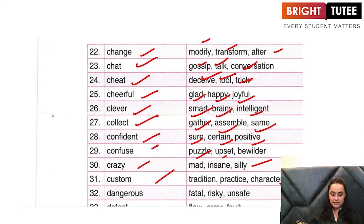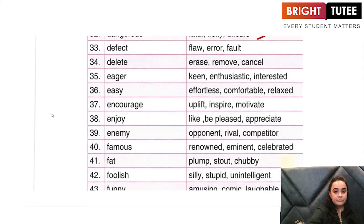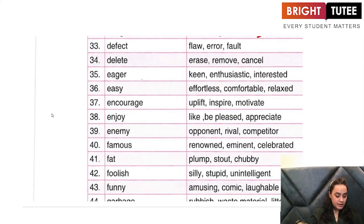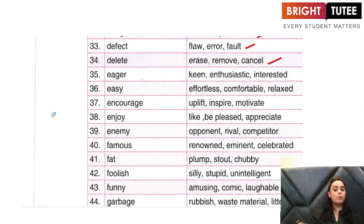'Dangerous' — is fatal, risky, unsafe. 'Defect' — is an error, or a flaw, or a fault in something. 'Delete' — erase, cancel.